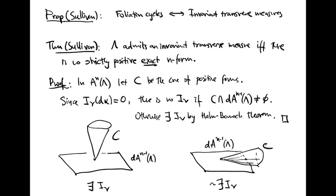We have seen that invariant transverse measures give rise to foliation cycles. Dennis Sullivan introduced the theory of foliation cycles and proved that this is an equivalence: foliation cycles are equivalent to invariant transverse measures. Using this, he proved that a lamination admits an invariant transverse measure if and only if there is no strictly positive exact N-form.